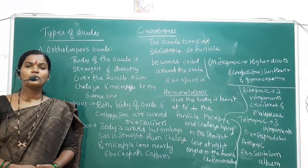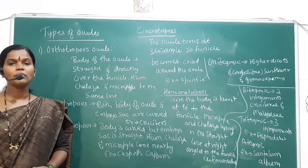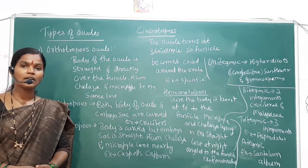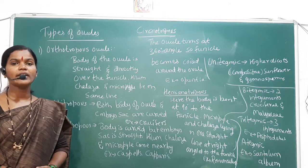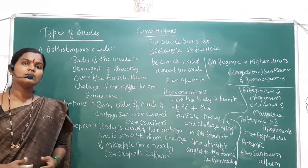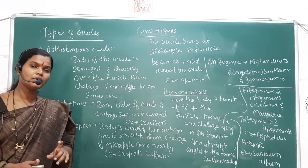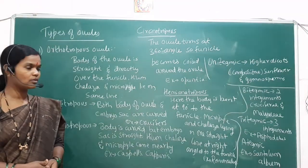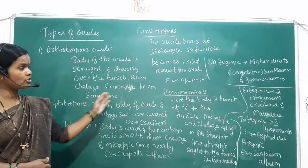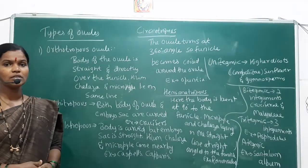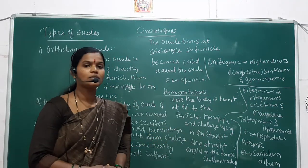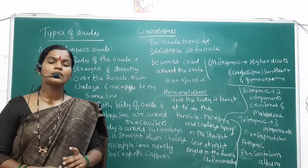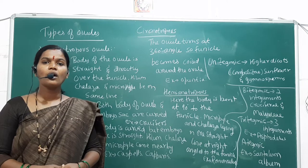Good morning students. In the previous class we saw the structure of an anatropous ovule, also called a Megasporangium. Let us do a brief revision of the anatropous ovule, and in today's class we are going to see the types of ovules and based on the integuments present, we will see those types once again.